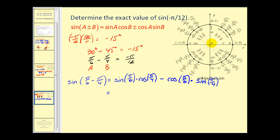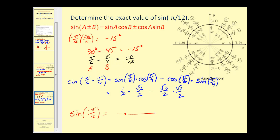Using the unit circle: sine(π/6) = 1/2, cosine(π/4) = √2/2, cosine(π/6) = √3/2, and sine(π/4) = √2/2. We have a common denominator of 4. The numerator is √2 minus √6. So the exact value of sine(-π/12) is (√2 - √6)/4.